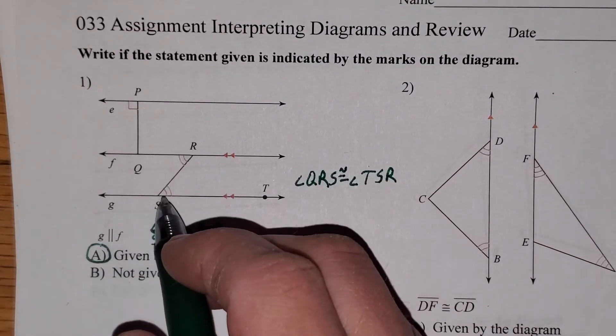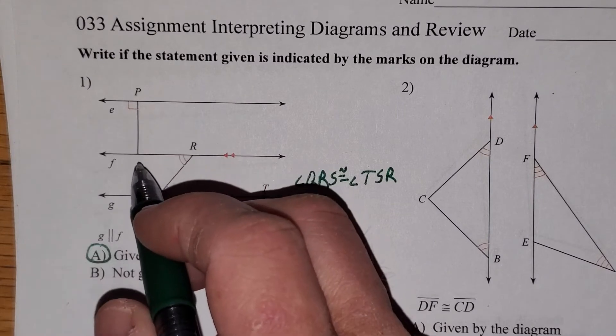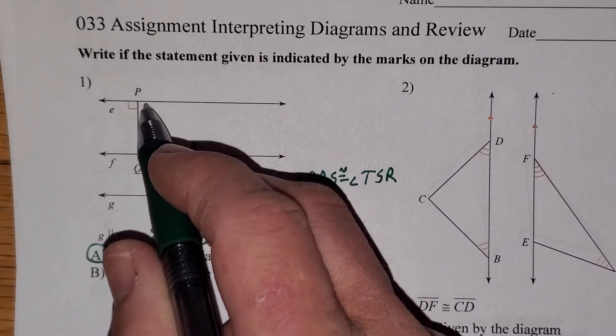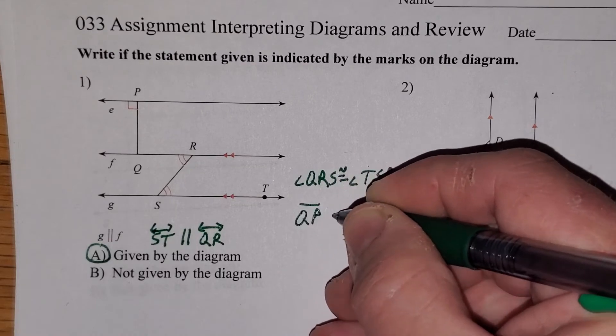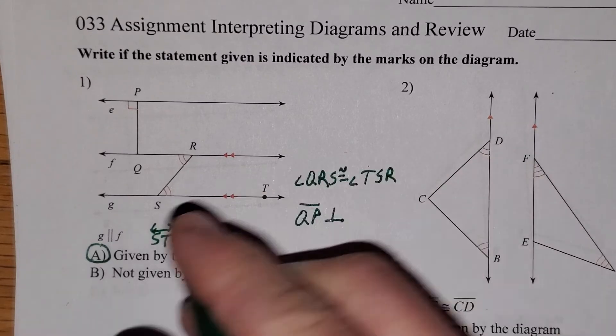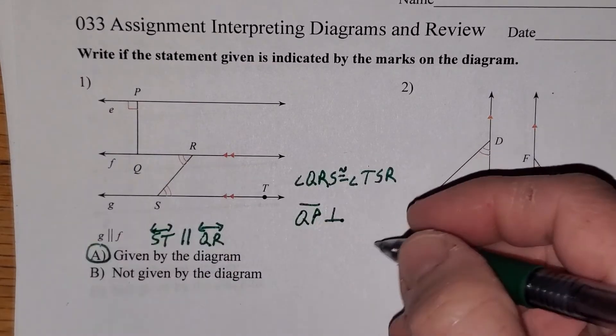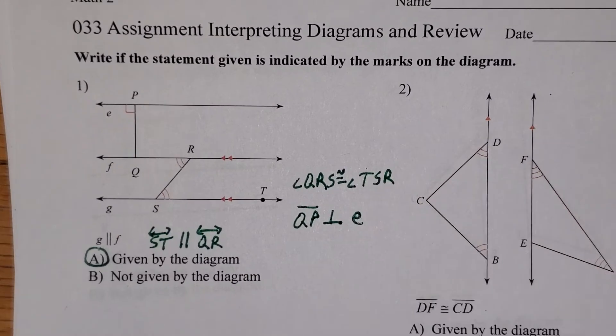And we could also assume that line QP, or segment QP, is perpendicular to line E. These are all things that we can assume by the information that they've told us. There's actually other things that we would actually know to be true, potentially, but we're only talking today on this lesson about things that they've marked on the diagram.